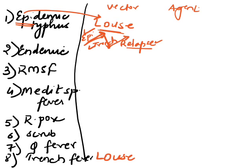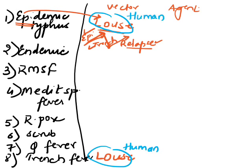An important point to remember: wherever louse is the vector, the mammalian reservoir is humans. So wherever louse is involved, the reservoir is humans. If the question asks for the reservoir for epidemic typhus, the answer will be humans.